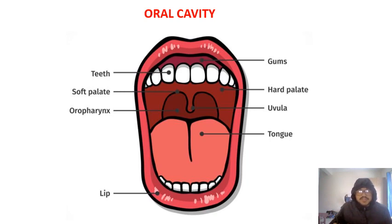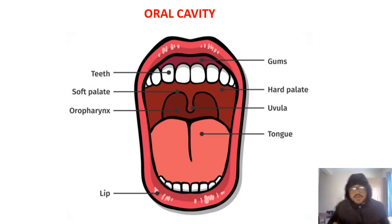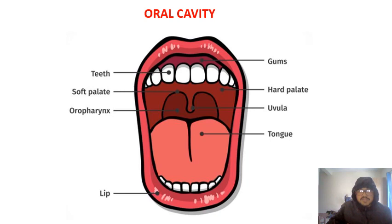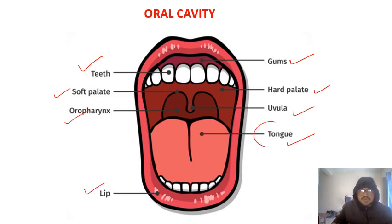This is the oral cavity and these are the main parts of the oral cavity shown in a simplistic diagram. There are much more complicated diagrams in books with a lot more information. The main parts of the oral cavity include teeth, gums, soft palate, hard palate, oropharynx, uvula, tongue, and lips. Today we are going to discuss the tongue and the teeth.